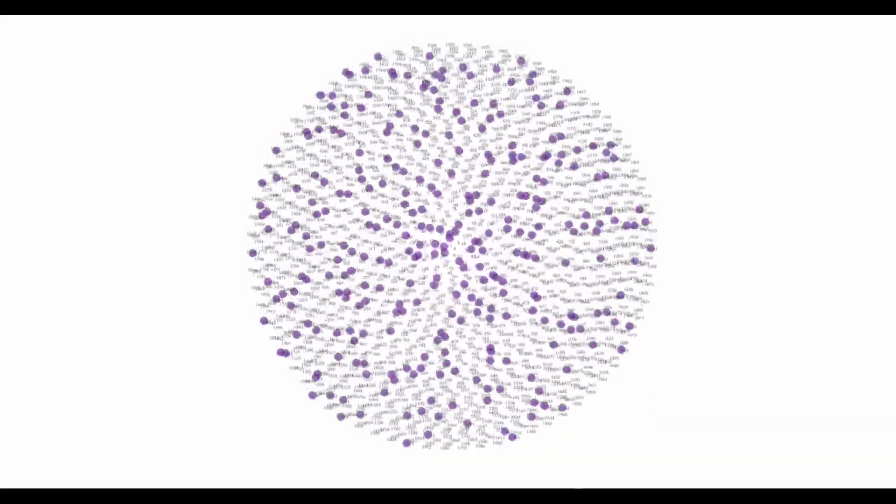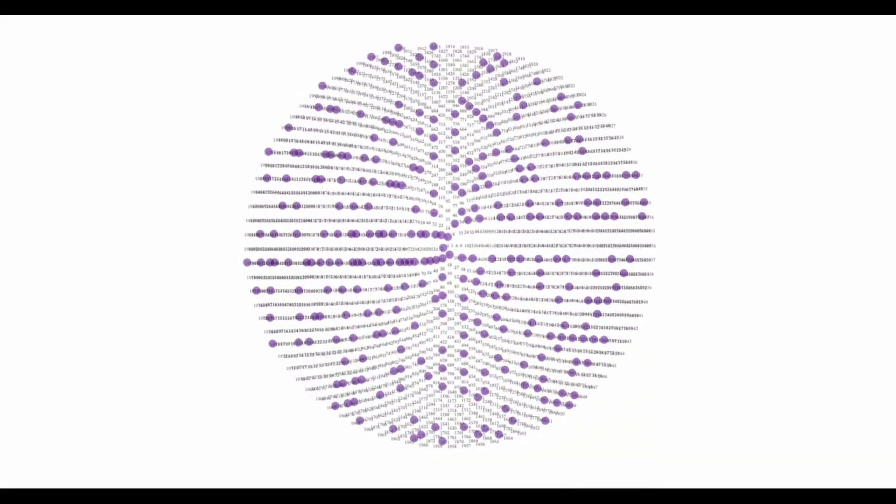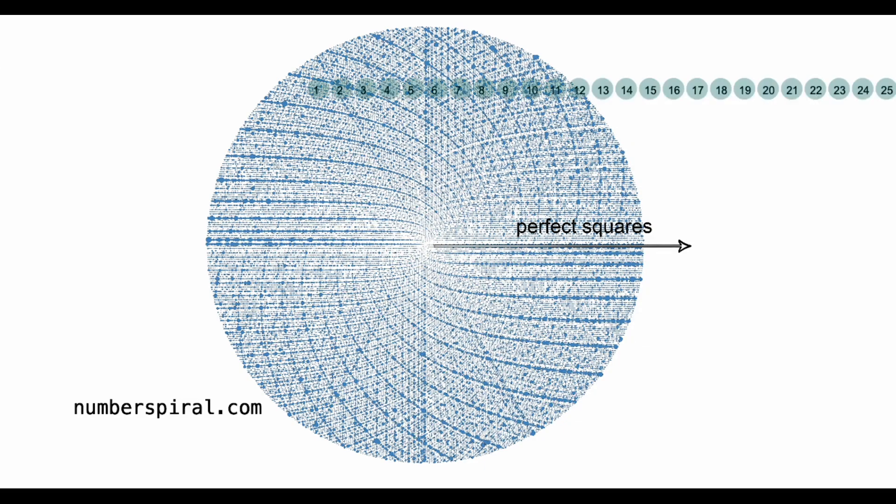If those exponential jumps correspond to the square of each integer, then the perfect squares line up and some cool prime patterns pop out. But there's more.